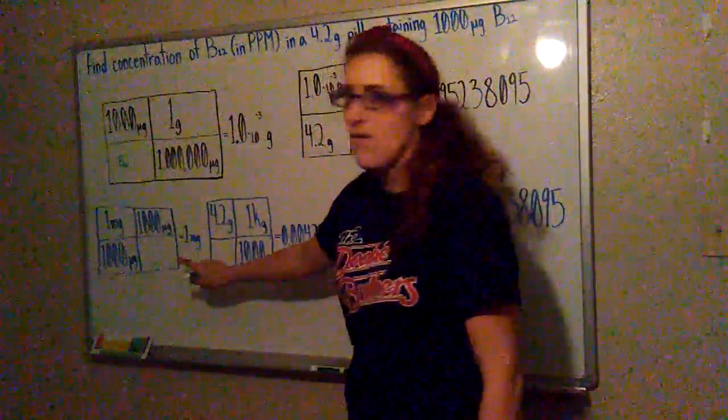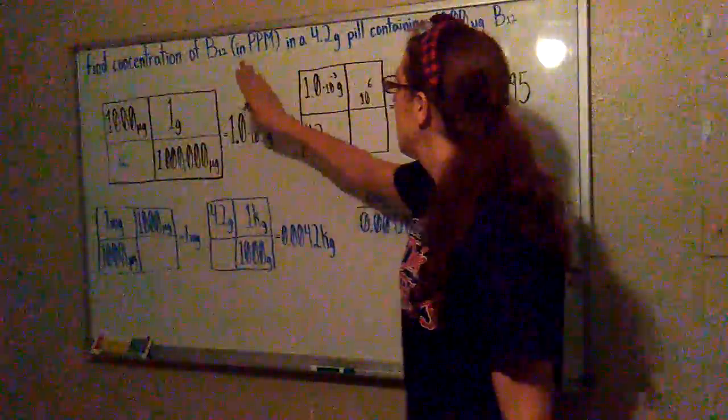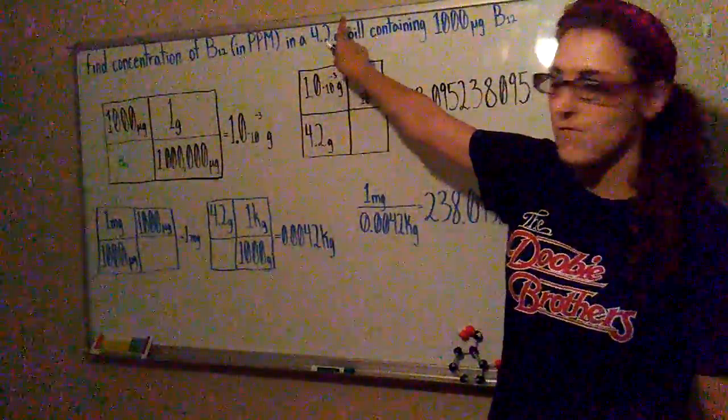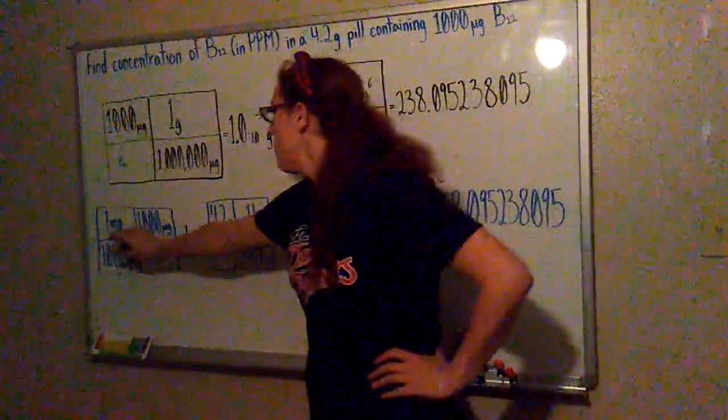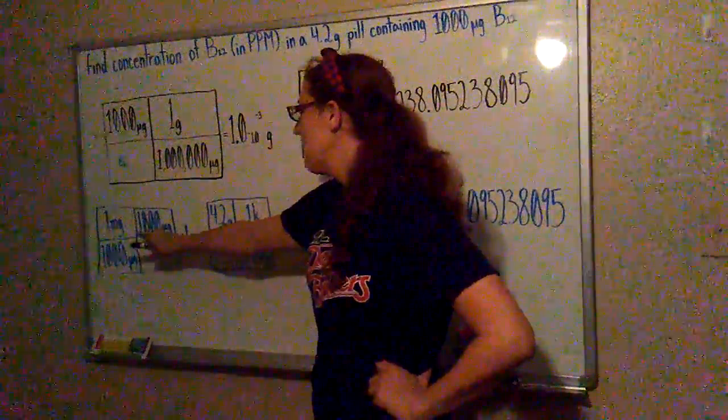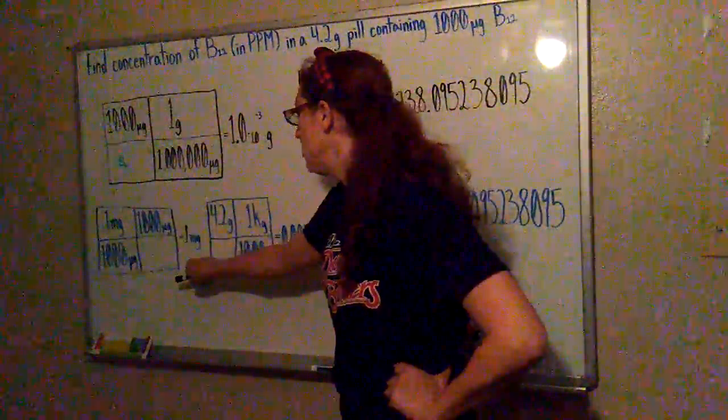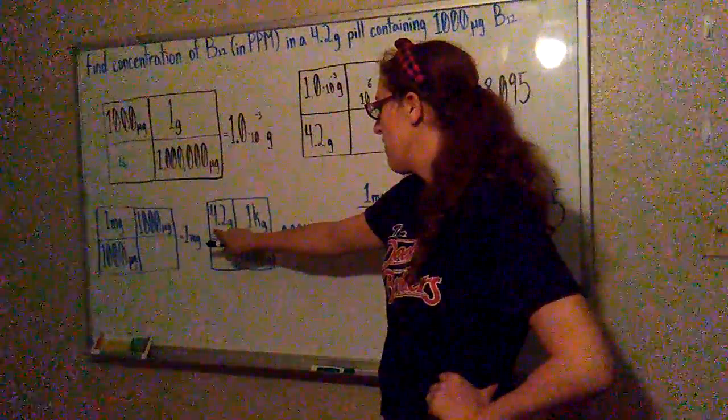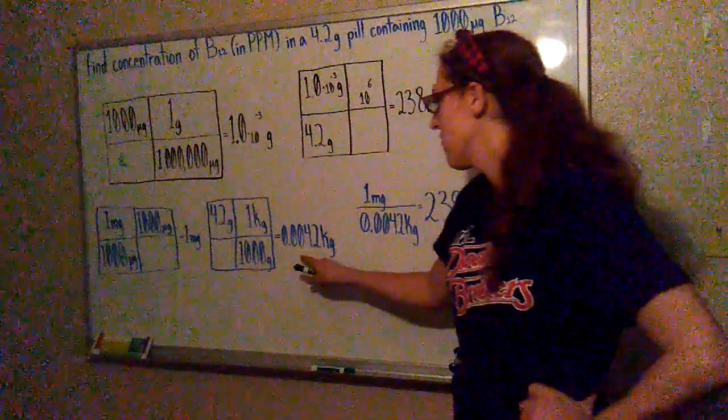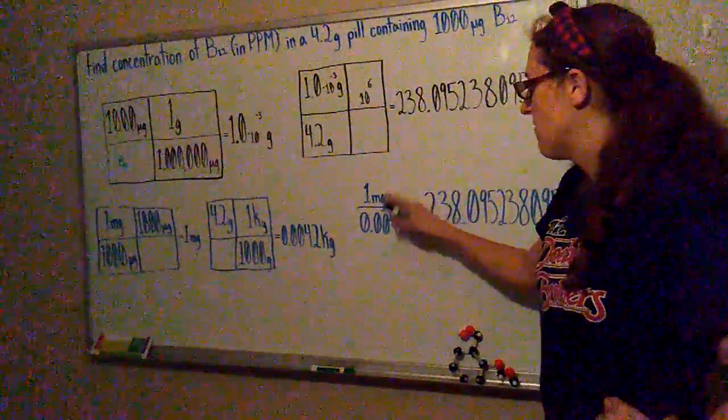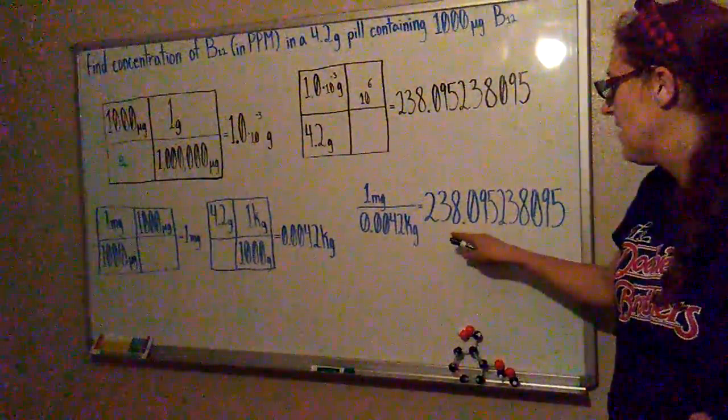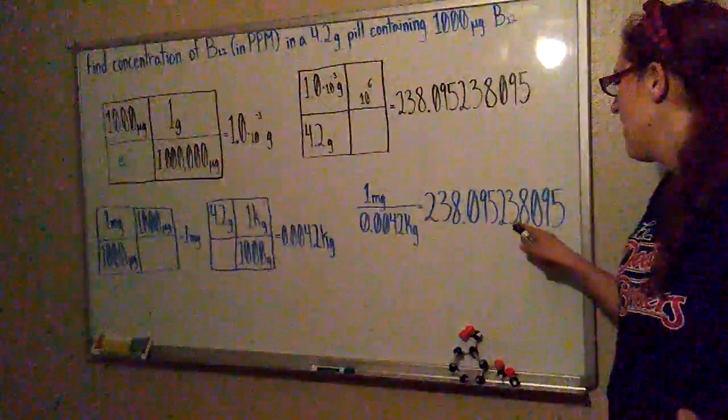You divide the milligrams of B12 by the kilograms of the total weight of the pill. So 1 milligram divided by 1,000 micrograms multiplied by 1,000 micrograms is 1 milligram, and 4.2 grams times 1 kilogram for every 1,000 grams equals 0.042 kilograms.